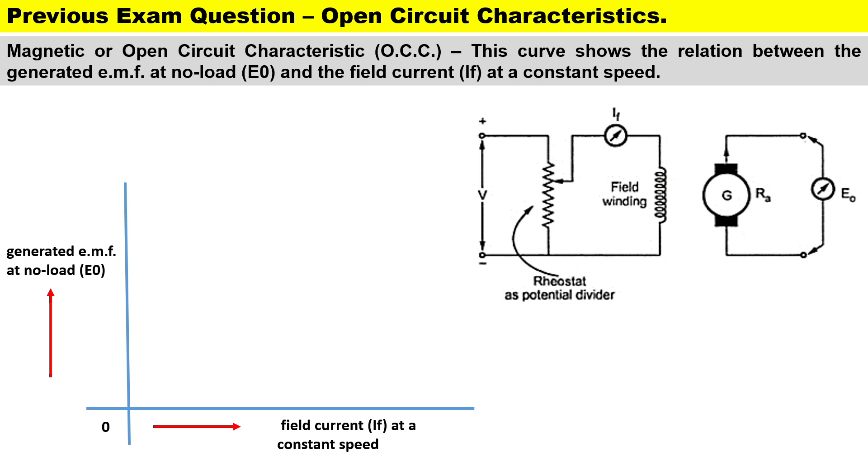In this video we'll be taking a look at a previous exam type question for open circuit characteristics. Before we look at that exam type question, let's look at the background to the circuit. The magnetic or open circuit characteristics, also known as OCC, this curve shows the relationship between the generated EMF at no load and the field currents at constant speed.